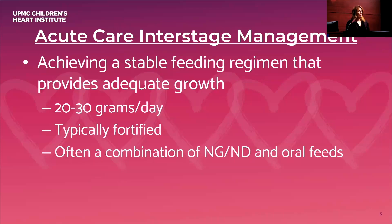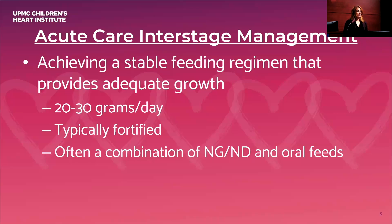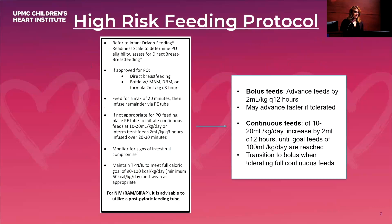One of our most challenging objectives is to achieve a stable feeding regimen that provides adequate growth. We aim for 20 to 30 grams per day weight gain and typically use fortified formula up to about 24 kilocalories per ounce. It is often a combination of NG or ND feeds with oral feeds. Looking back over the last 10 to 15 years, about 90 percent of our patients need a combination of an NG tube with their oral feeds.